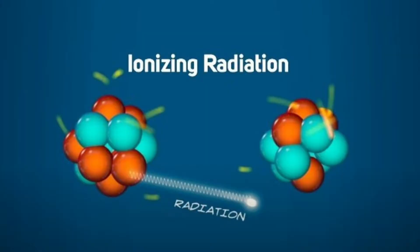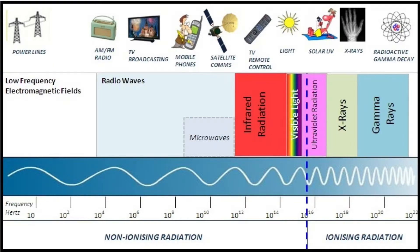First of all, we need to know what ionizing radiation is. Ionizing radiation is high energy given off by radioactive materials or sources. It has a lot of energy, much more than low energy radiation such as radio waves and microwaves, which are considered non-ionizing radiation. Today I'm going to tell you the important things we have missed out about ionizing radiation.